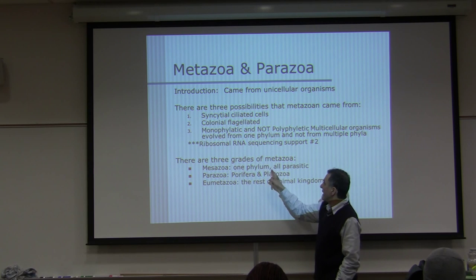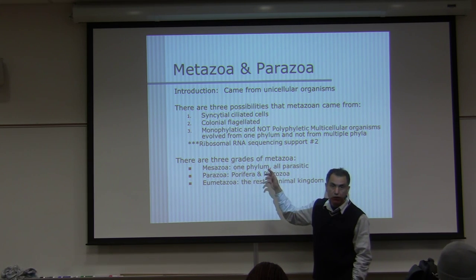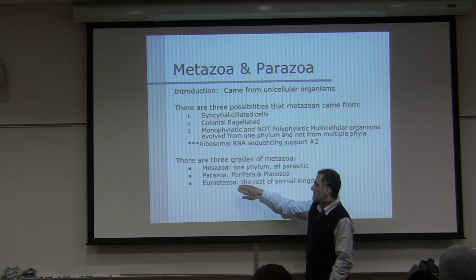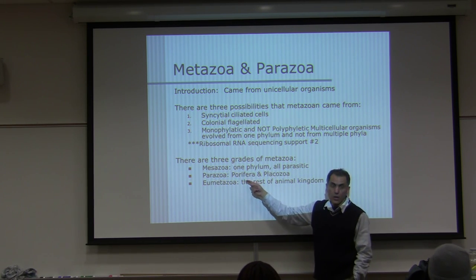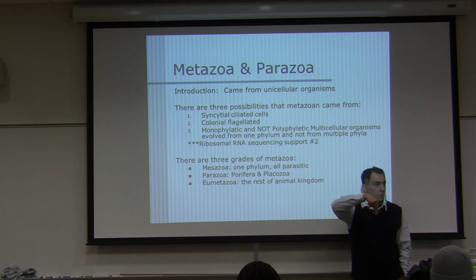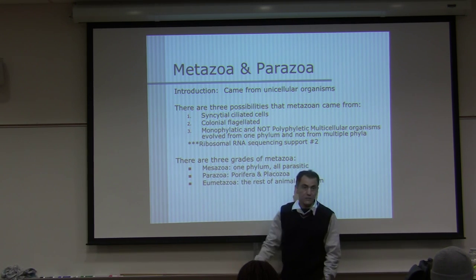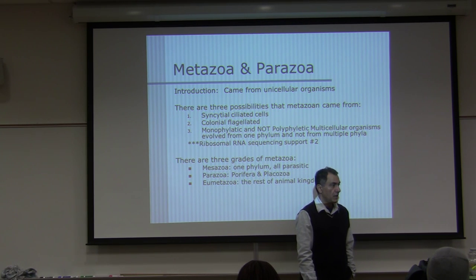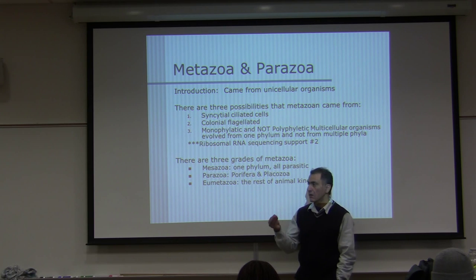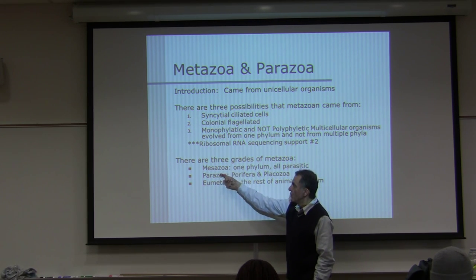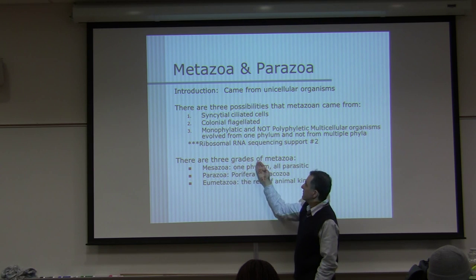One grade is mesozoa — one phylum, all parasitic of octopus and other organisms. Another is parazoa, which are the sponges. And then eumetazoa, which is the rest of semester material. 'Eu' means true metazoa — true multicellular organisms. These two are different enough to be placed in different grades.